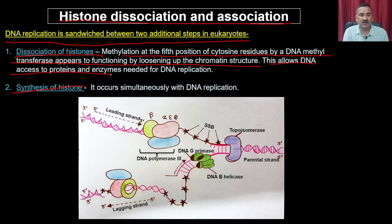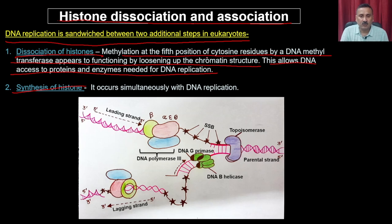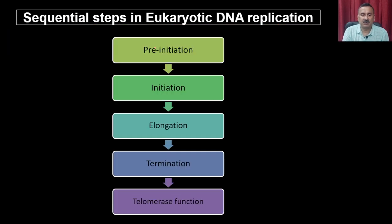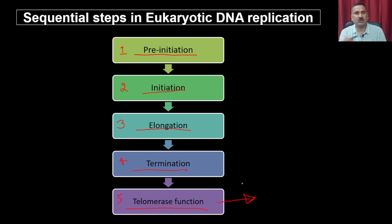Methylation at the fifth position of cytosine residue by DNA methyltransferase functions by loosening the chromatin structure, allowing DNA access to the proteins and enzymes needed for replication. DNA and histones are attached by electrostatic interactions; once cytosine in the DNA is methylated, it loosens the interaction between histones and the chromatin structure. Synthesis of histones occurs simultaneously with DNA replication. The sequential steps in DNA replication are: pre-initiation complex formation, initiation, elongation, termination, and telomerase function.